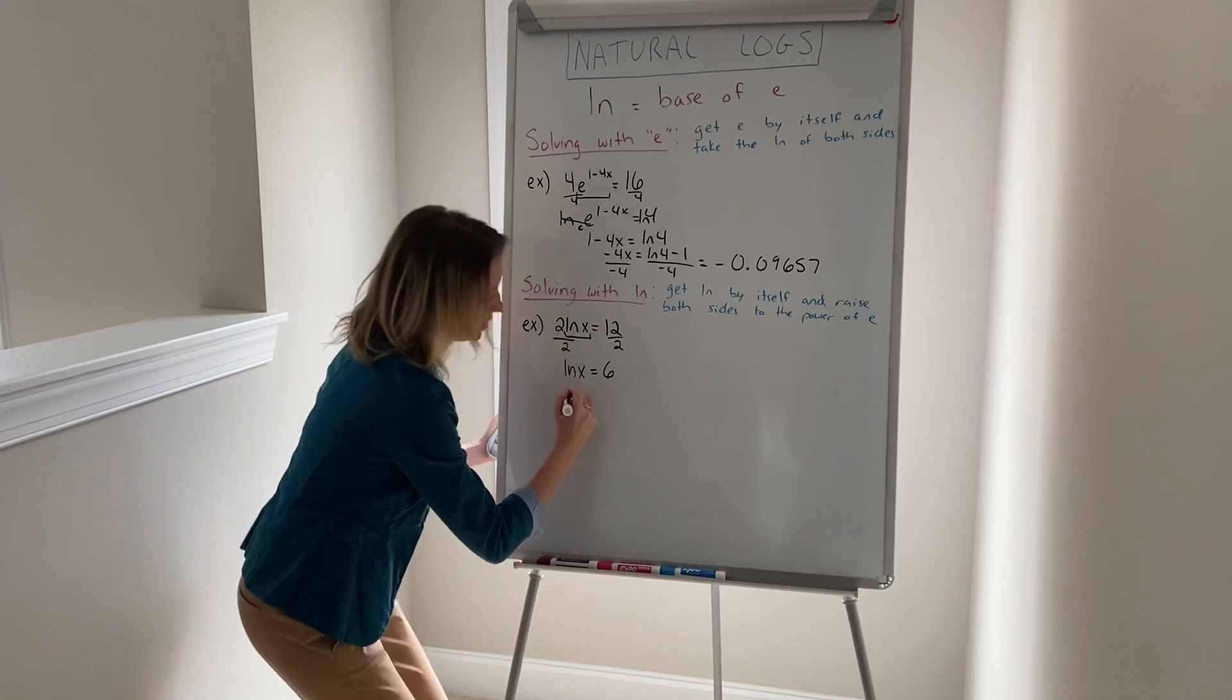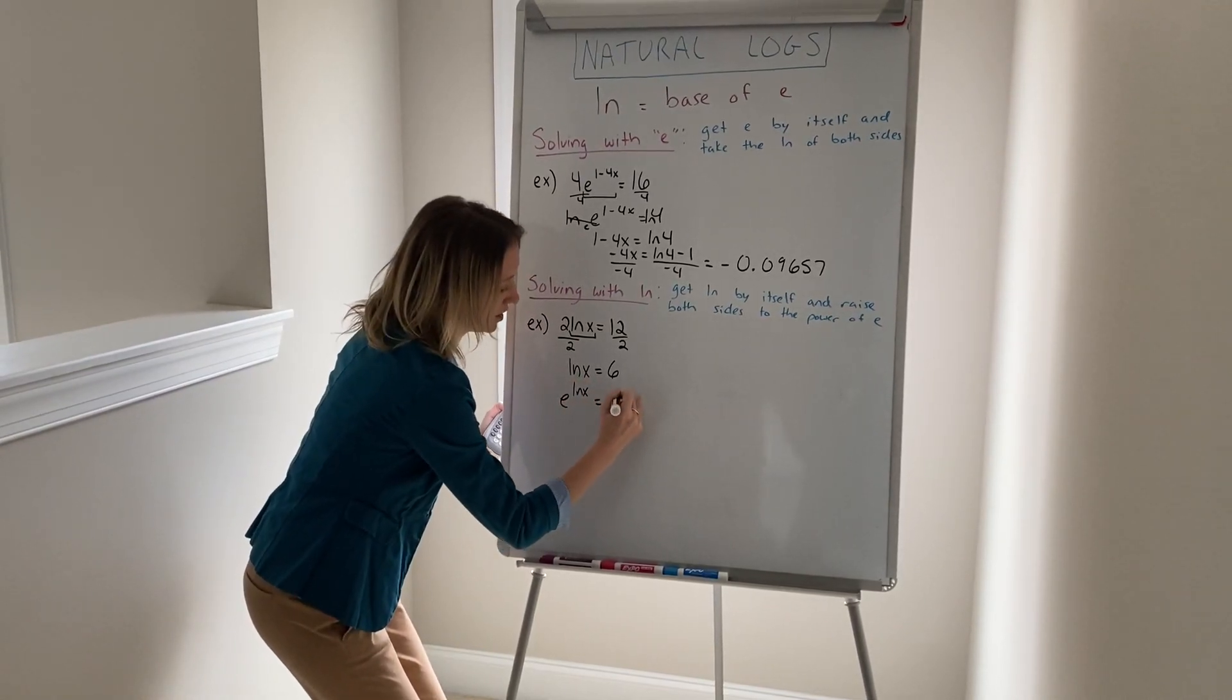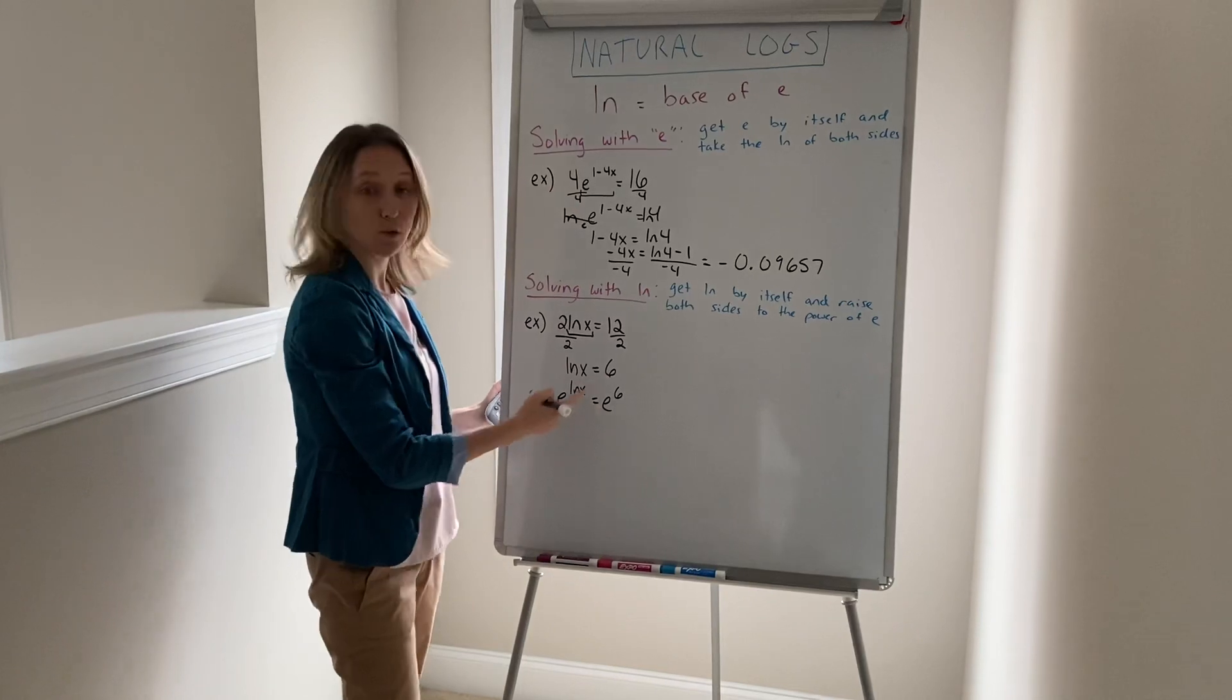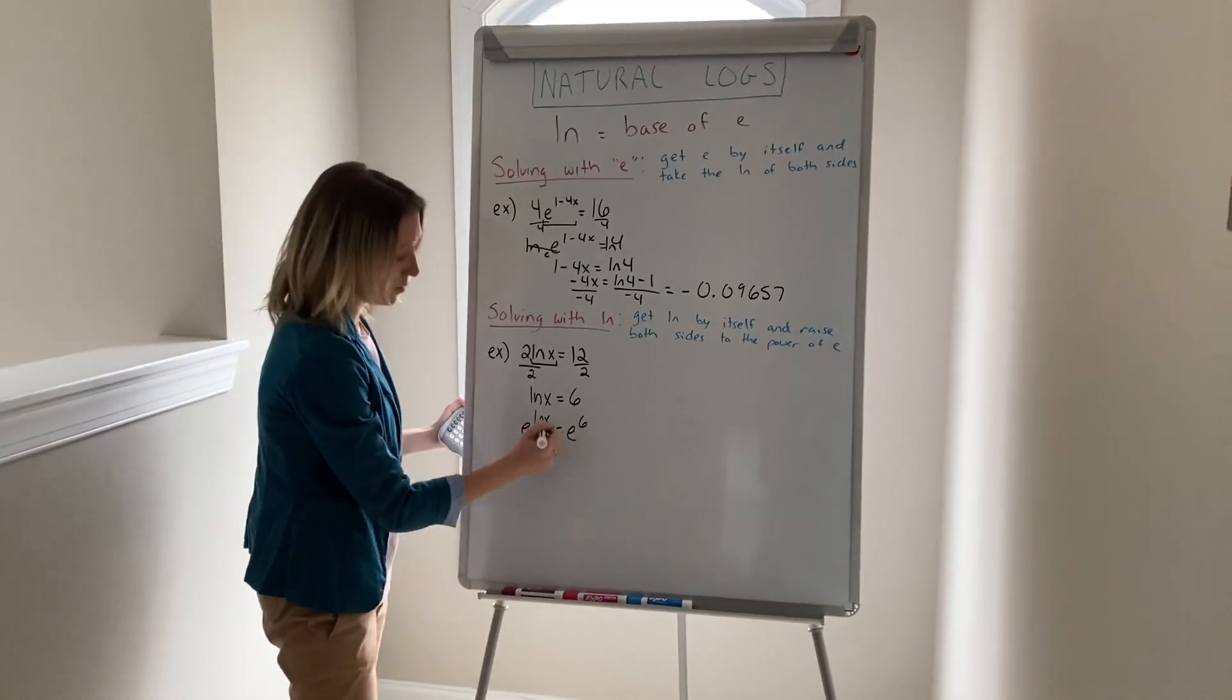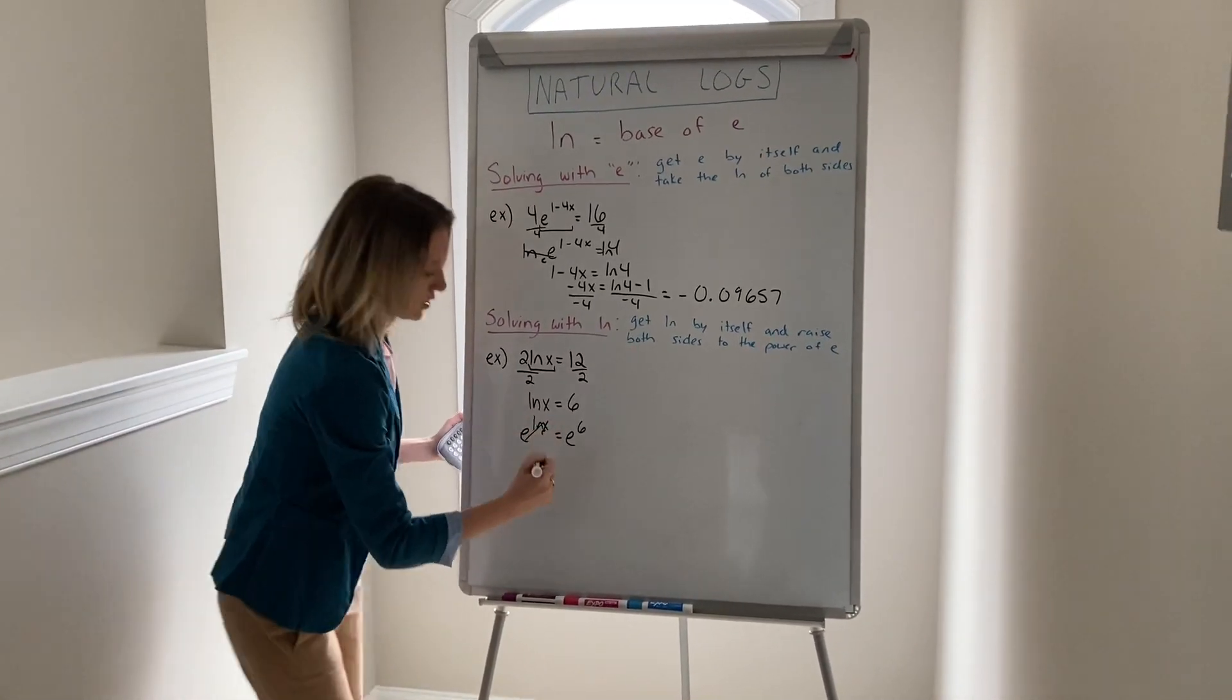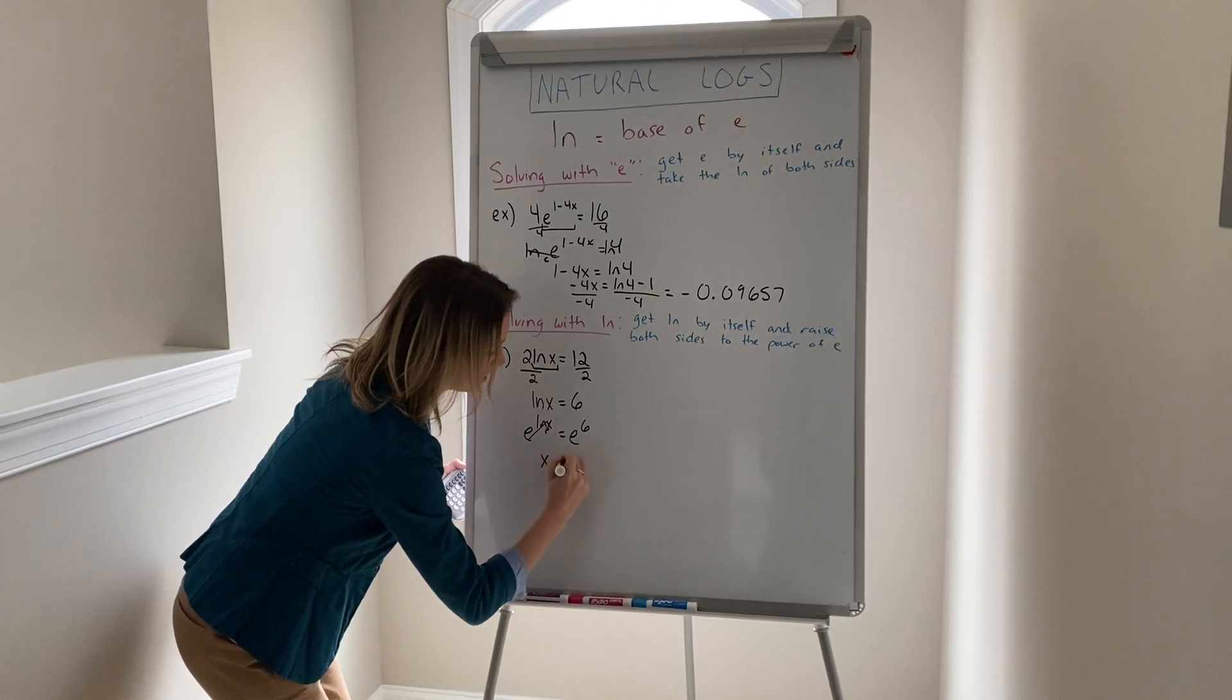Now again, the reason we do this is that these cancel out because the base is e and so those cancel out. So you have x equals e^6.